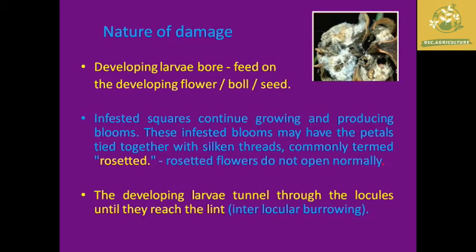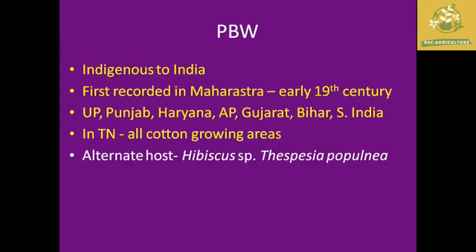The pink boll worm develops inside the flower, boll, and seed. It forms a rosette disease where petals are tied together with silken threads, producing a white spongy bloom. The developing larvae tunnel through the locules until they reach the lint, causing internal browning.